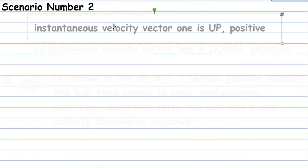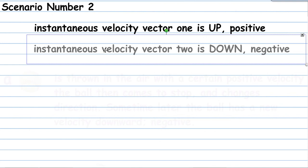This is scenario number 2, as I mentioned in the previous installment. In this case we're looking at an instantaneous velocity vector that is directed upwards, or what we're going to define as being positive, and later on the instantaneous velocity vector number 2 will be down, or negative.